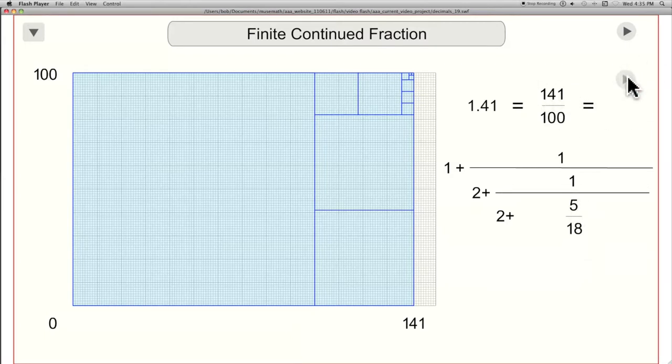It's getting, approaching something we can recognize. There we go, 41 eighths, inverted 18 41s. 2 is 82 41sts, plus 18 is 100 41sts. There we go, inverted is 41 100ths. 1 is 100 100ths. Now you got that, and there it's proved.